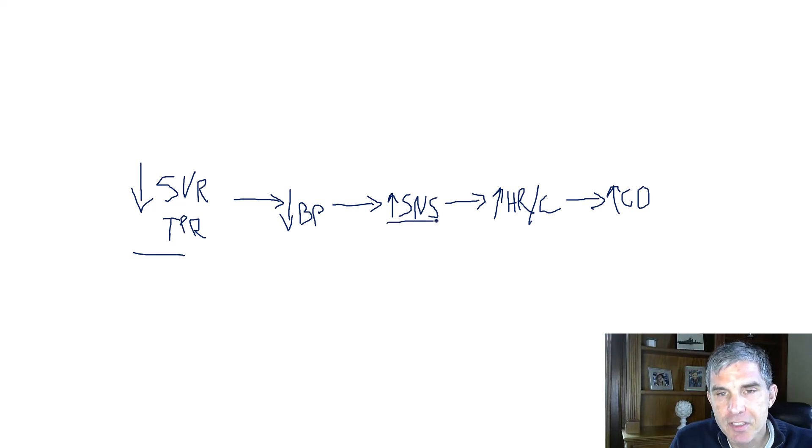This is because of the sympathetic nervous system activity. It's also because when the SVR and the blood pressure are low, that represents low afterload on the left ventricle. So that also helps to raise the cardiac output.